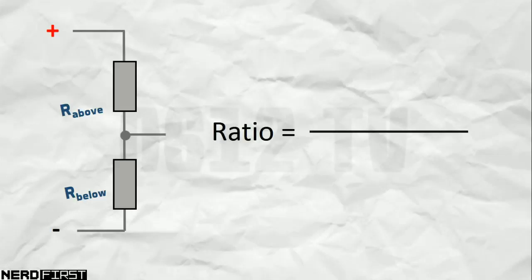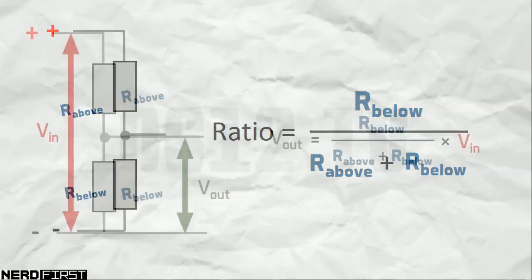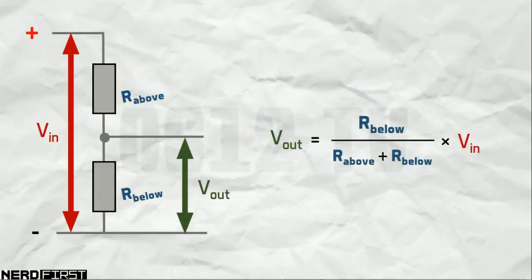The numerator of the ratio comes from the resistance under the point tapped, while the denominator is the total resistance between the positive and negative points. This ratio gives you a number less than 1. Now, multiplying that by the total voltage across the circuit, we get the resultant voltage.